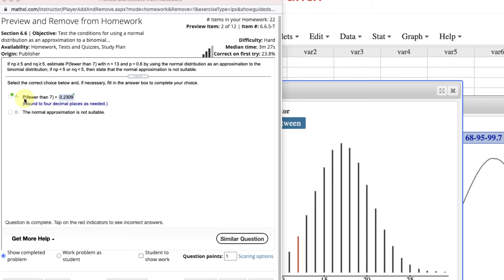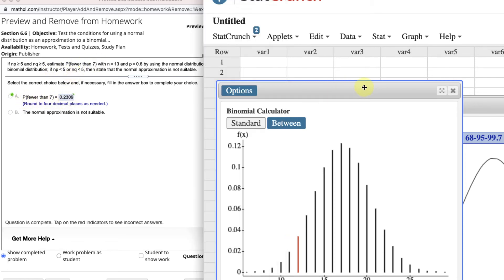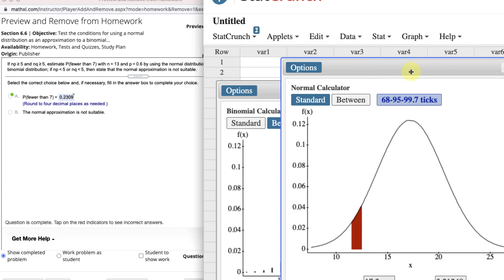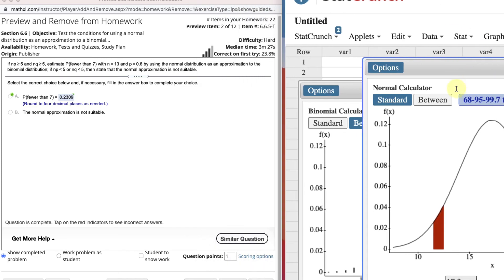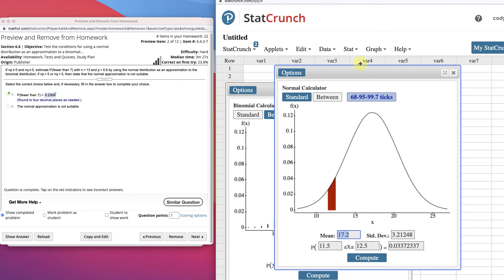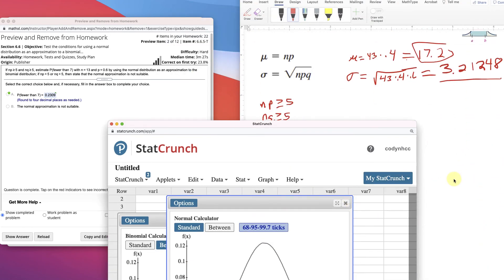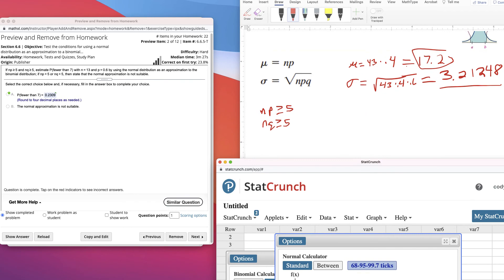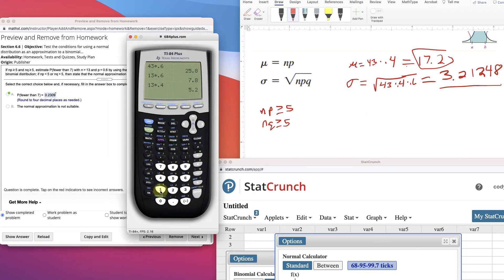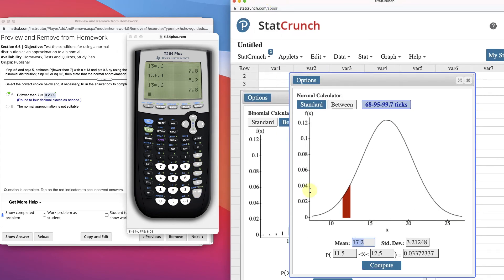Fewer than 7. Not equal to 7, but fewer than 7. So let's go over here, grab our normal approximation tool, our normal calculator, and put in our mean. Oh, we need to calculate the mean first. So let's go calculate the mean. Here's our formula. np, n is 13 times p, which was 0.6. We already did it, I guess. 7.8.